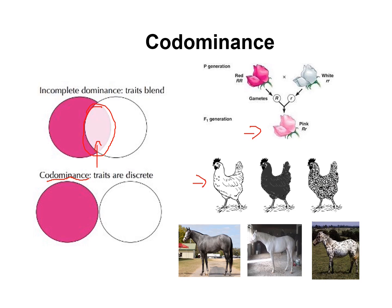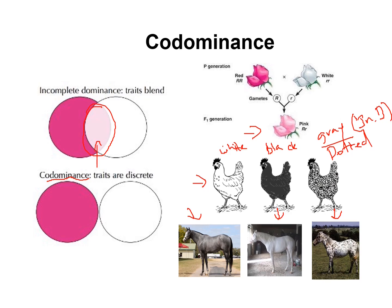Incomplete dominance is when the traits are blended, and codominance is when the traits are discrete. Here you can see a white phenotype and a black phenotype, and instead of being gray as in incomplete dominance, with codominance both phenotypes are discrete. When they are together they form another phenotype, but it's not the intermediate — it's not blended.